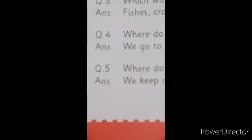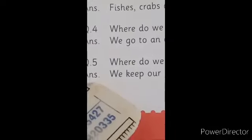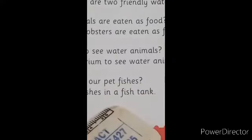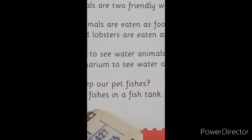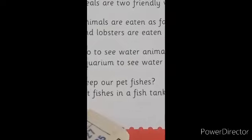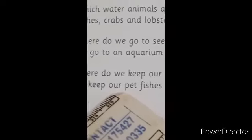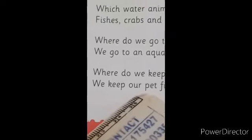Question number 5. Where do we keep our pet fishes? Bacchon, jo fish hai, aap usse ko kaha pere rakhte hai? We keep our pet fishes in a fish tank. Bacchon, ek machli rakhne ka tank hota hai, jo kaanch ka bana hota hai. Hum log usse fish rakhte hai aur uski dekhbhal karte hai na? Aap usse ko dana khilate hai na?